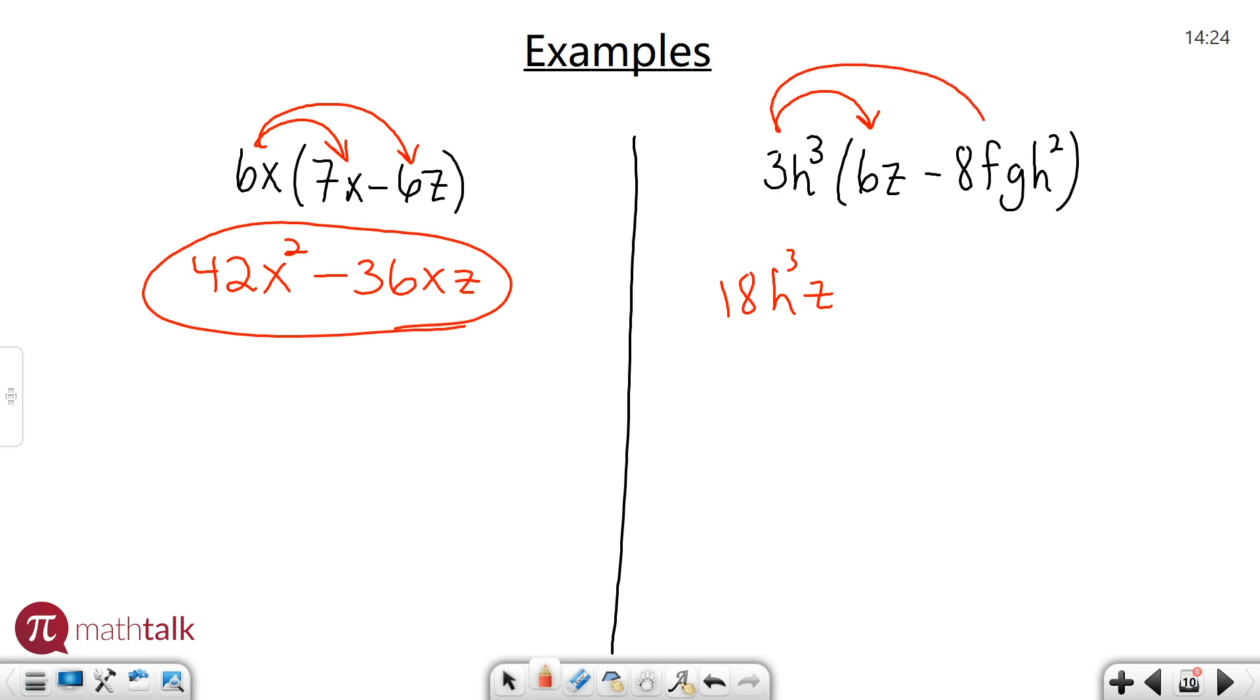Then take 3h³ and multiply by the second term. 3 times negative 8 is negative 24. My variable h³ will pair up with h² because they're both h's, so I'll add the exponents—3 plus 2 is 5. The other two letters, G and F, I'll just copy down. It doesn't really matter what order the letters are in, but typically you'll see them in alphabetical order. So the answer is -24FGH⁵, which is the cleaner version.